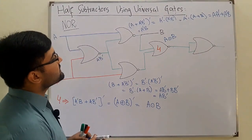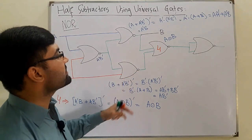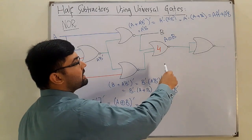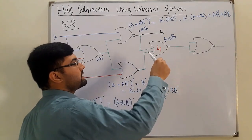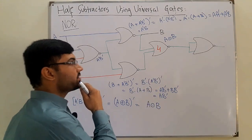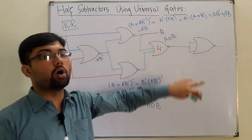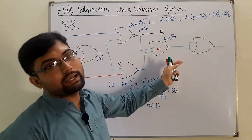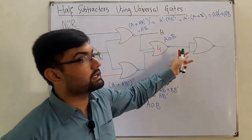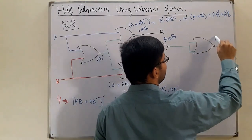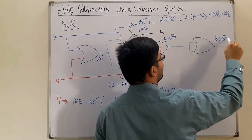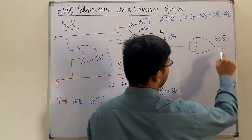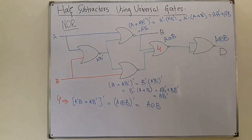The output of gate 4 is (A XOR B)', which is A XNOR B. Then gate 5, used as a NOT gate, inverts it: the complement of XNOR is XOR. So the final output is A XOR B, which is the difference. We know a single NOR gate can be used as a NOT gate, and over here we have A XOR B — the difference output.